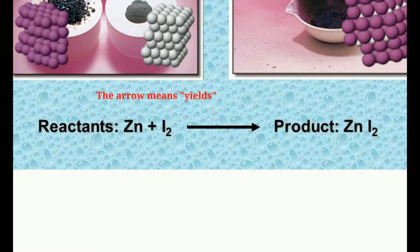The left side is the reactants. The arrow means "yield" — you can make the arrow as long as you want, though I usually draw it short. The arrow means yield, and I'll write some other words on the board. Think of some other words besides yield.